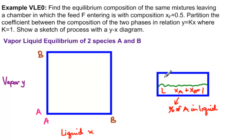Similarly, you have vapor up here, and it's YA plus YB equals one. This is the percent of A in the vapor.